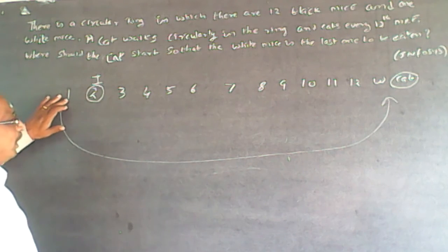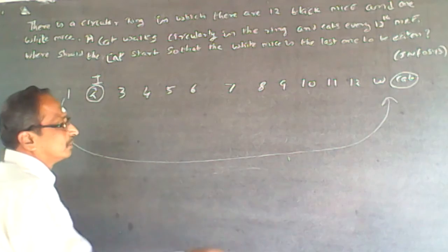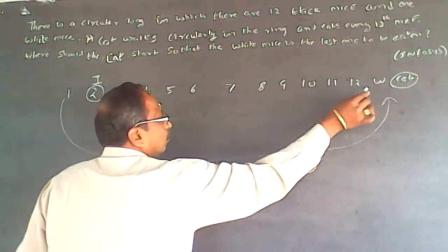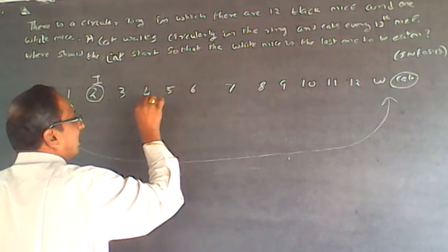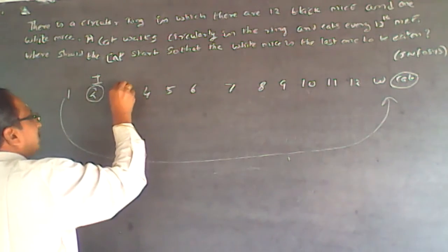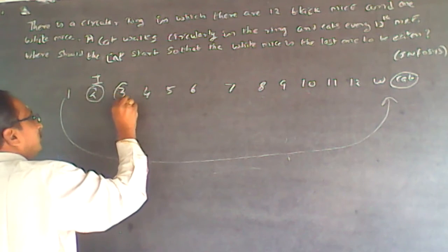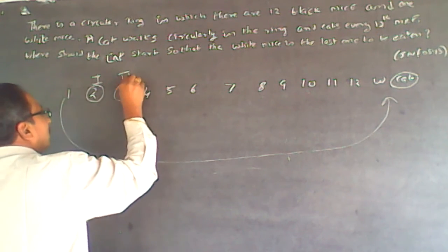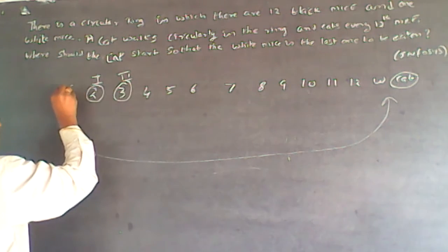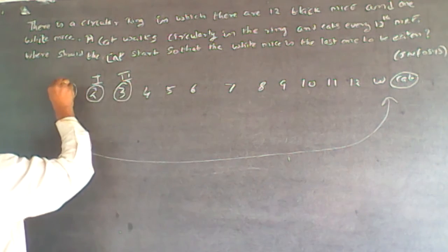Then again counting: 1, 2, 3, 4, 5, 6, 7, 8, 9, 10, 11, 12 — this will be the second one to be eaten. And continuing, this will be the third one to be eaten.